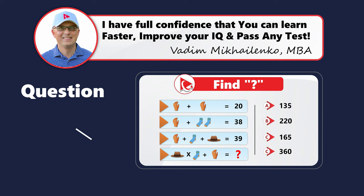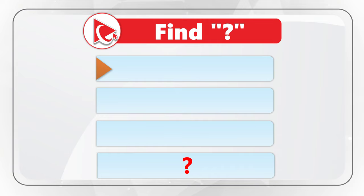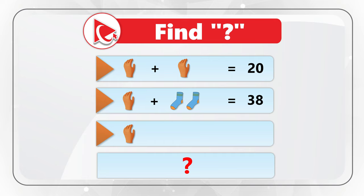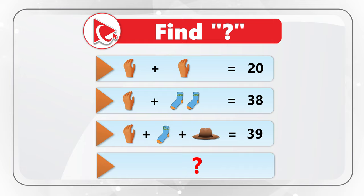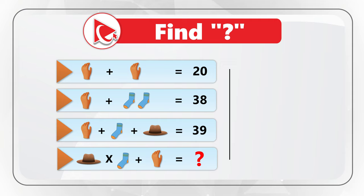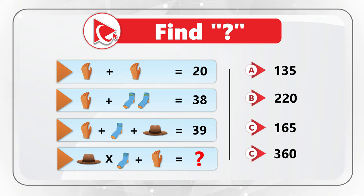Here's one of my favorite questions, where you test your mental skills as well as attention to details. You are presented with a series of equations and you need to calculate the missing number. The first equation is glove plus glove equals 20. The second equation is glove plus 2 socks equals 38. The third equation is glove plus sock plus hat equals 39. And then the final equation, where you have the missing number, is 1 hat multiplied by 1 sock plus 1 glove equals the missing number. The choices are A 135, B 220, C 165, and D 360.